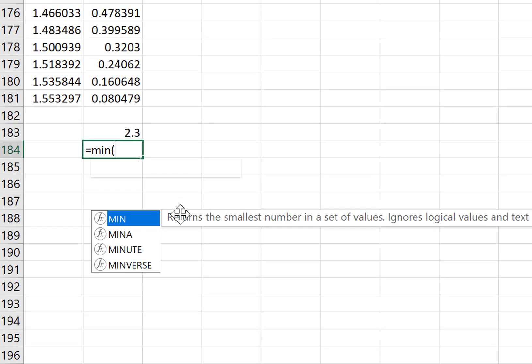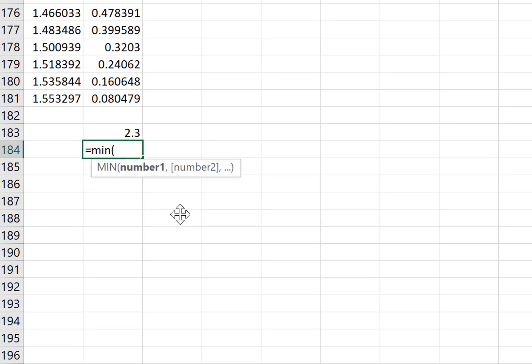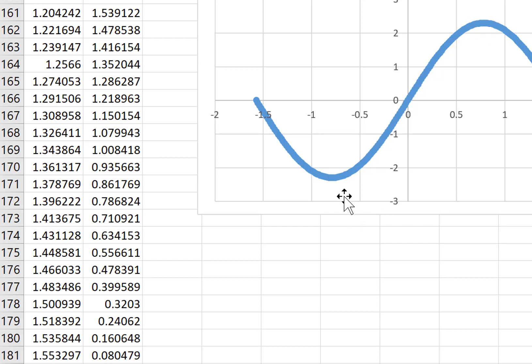Now I can do the same with the minimum, c2 to c181. So I get my maximum value is 2.3 and my minimum value is negative 2.3. So my peak to peak voltage is the positive number minus the negative number, 4.6. That's my peak to peak voltage.